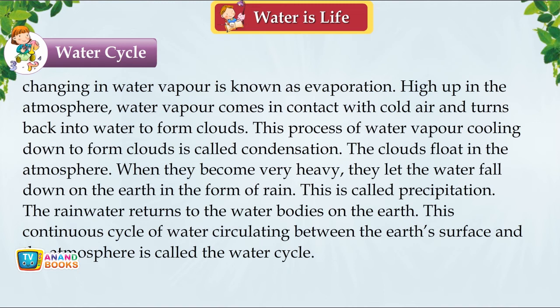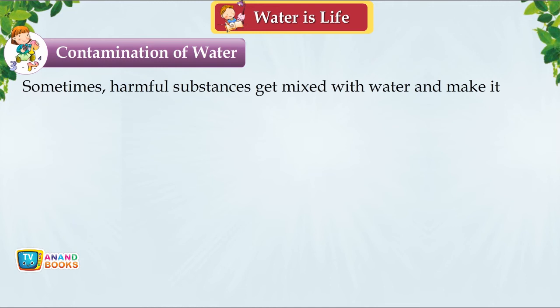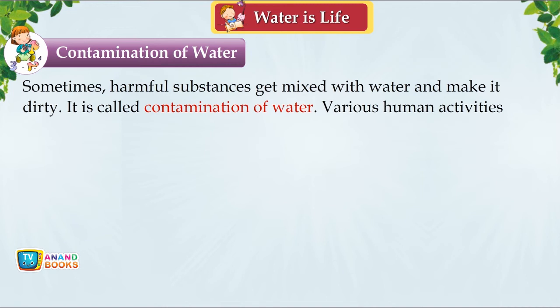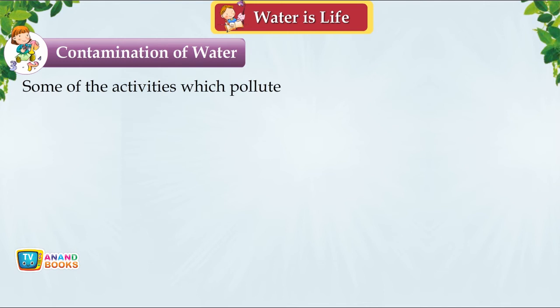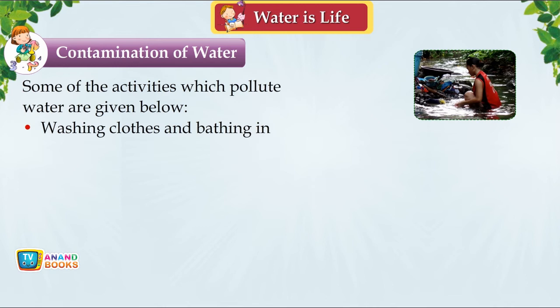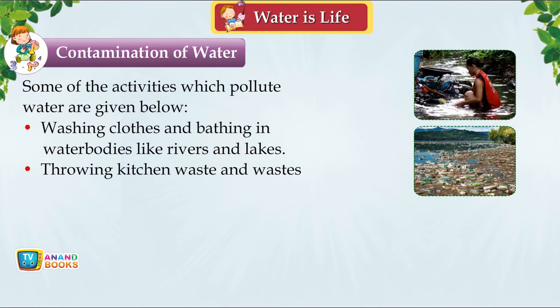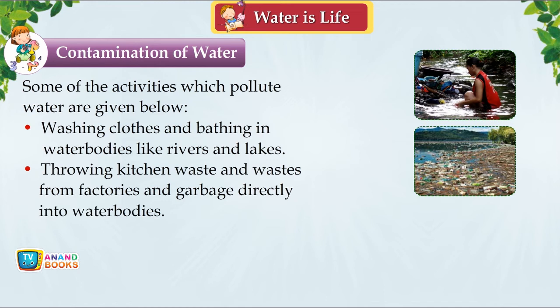Contamination of Water. Sometimes harmful substances get mixed with water and make it dirty — this is called contamination. Various human activities cause it. Activities that pollute water include: washing clothes and bathing in rivers and lakes; throwing kitchen waste, factory waste and garbage into water bodies; and animals bathing in rivers and lakes.